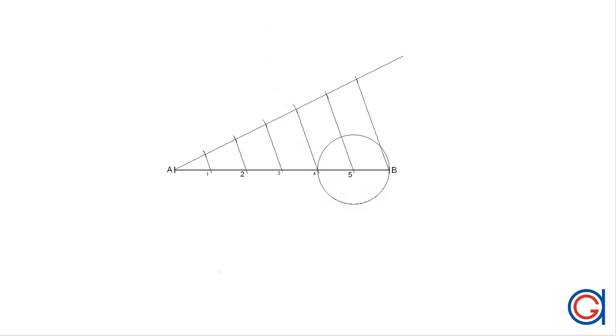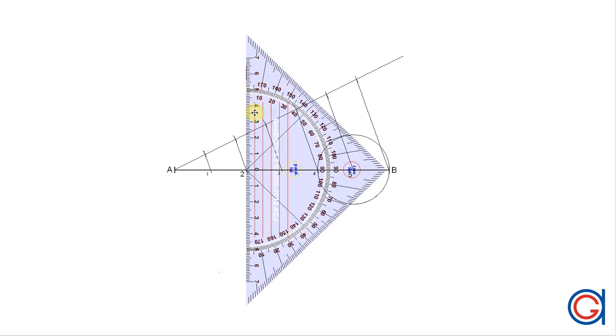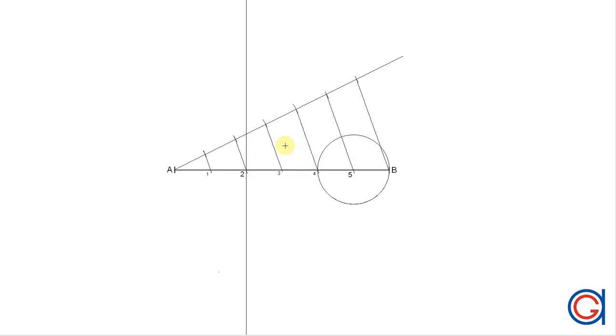Now we are going to draw a perpendicular line to the axis AB passing through point two and elongate it on both sides.